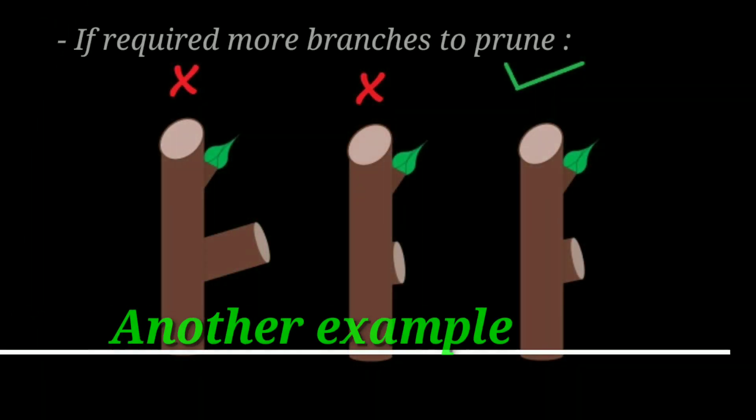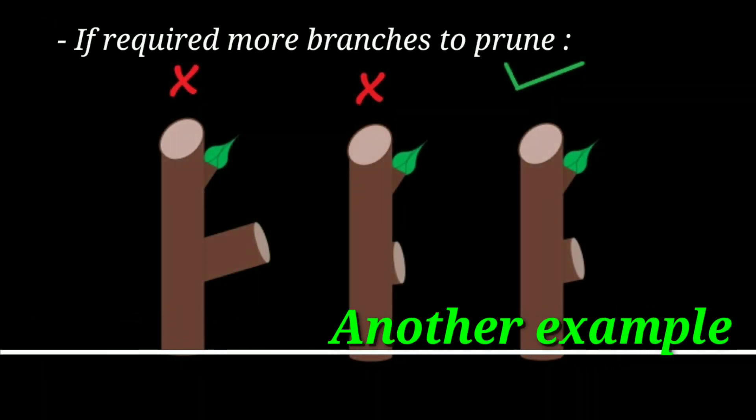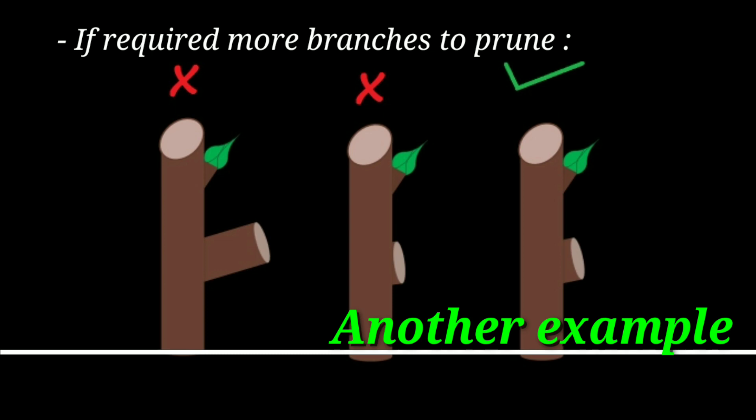Now let's look at one more example for when we need to prune more than one branch attached to the main stem. In this case also we need to follow all these points and make a right cut, as shown in this example.